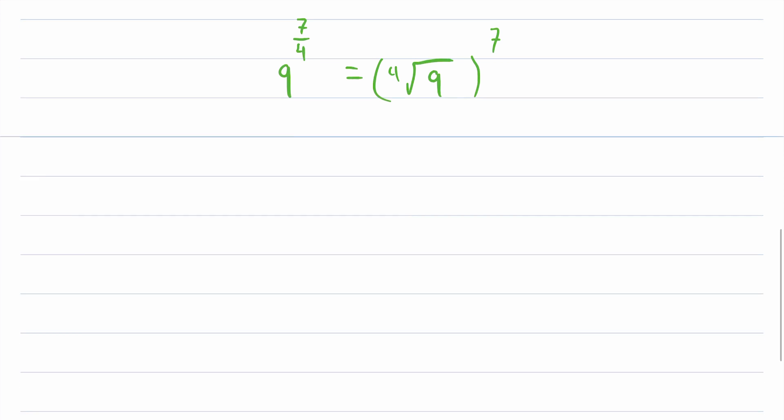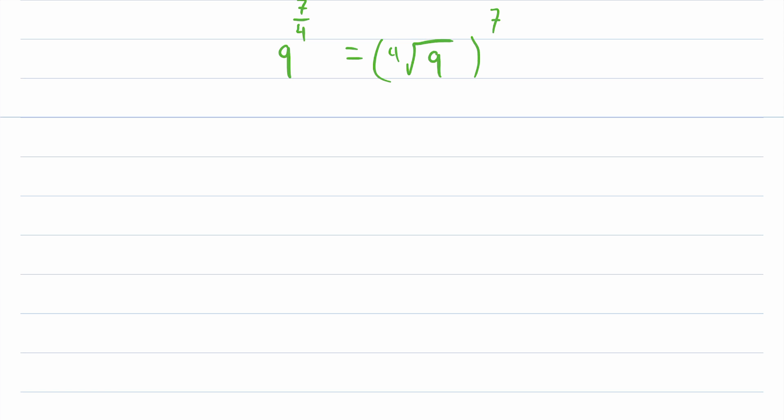Should we do another example? I think so. How about it? Let's say we have 54 to the power of 19 over 21. Really nasty. What is this equal to? Well, the denominator tells us the root we should take. So we're going to take the 21st root of 54. And then the numerator is left as an exponent. Raise this to the power of 19.